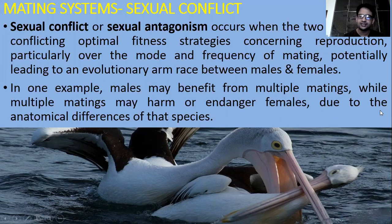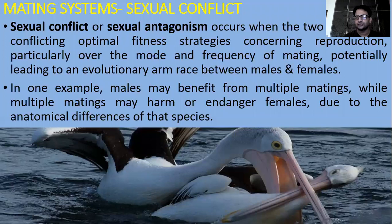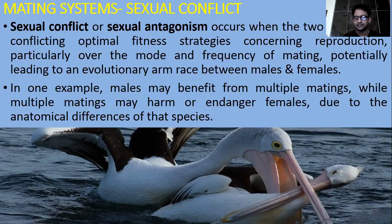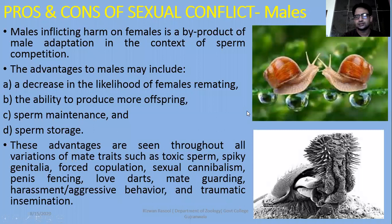Sexual conflict or sexual antagonism occurs when two sexes have conflicting optimal fitness strategies concerning their reproduction or having their offspring, particularly over the mode and frequency of mating, potentially leading to an evolutionary arms race between males and females. Males on one hand are trying to have greater reproductive success, and on the other hand females are also trying to have greater reproductive success by adapting various strategies. In one example, males may benefit from multiple matings while multiple matings may harm or endanger females due to anatomical differences of that species.